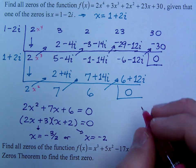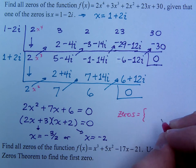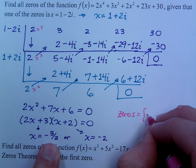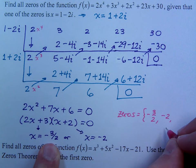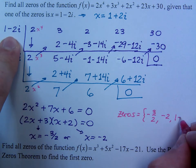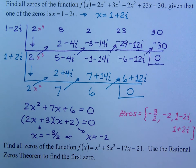We're supposed to have 4 0s, and that's what we have. Your 0s are negative 3 halves, negative 2, 1 minus 2i, and 1 plus 2i. So, there are my 4 0s.